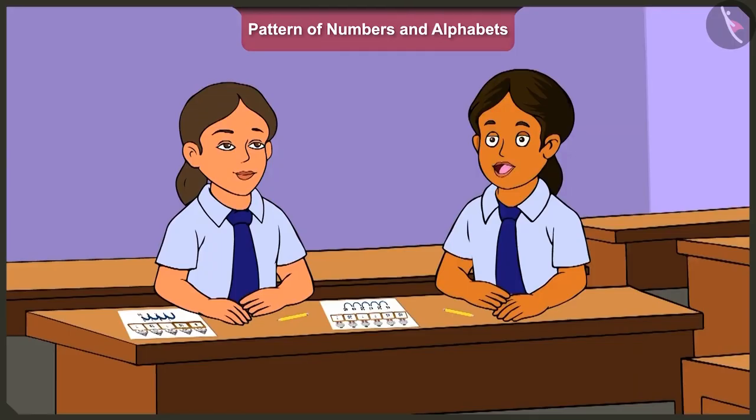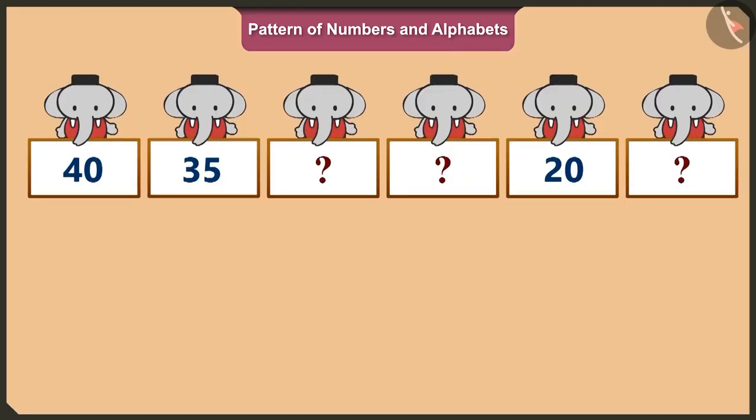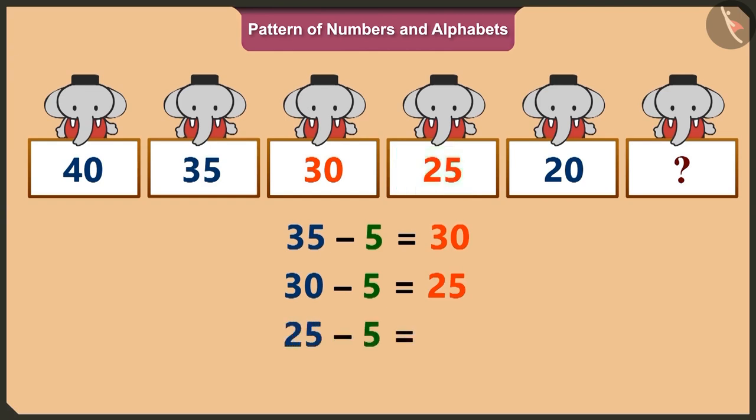Yes. We can solve this puzzle by subtracting five from each term. Hmm. On subtracting five from thirty-five, we will get thirty. And on subtracting five from thirty, we will get twenty-five. Yes. And on subtracting five from twenty-five, we get twenty.